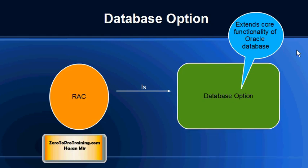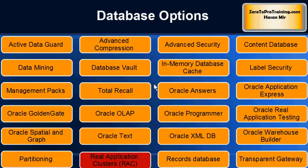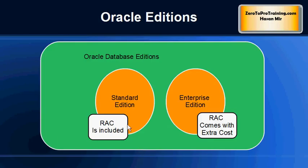Real Application Cluster is one of the database options available to extend the functionality of Oracle database. On the screen you can see various options that you can add to the Oracle database to extend its functionality. In this session we are going to talk about Real Application Clusters; in other videos we will discuss other database options. The RAC option is included in the standard edition of Oracle database and comes with extra cost for enterprise edition.